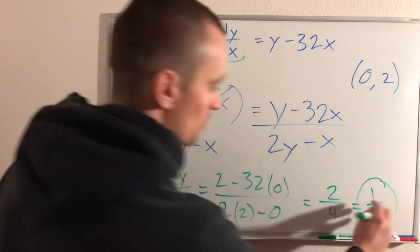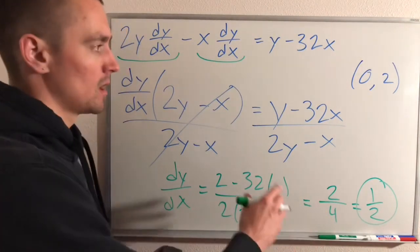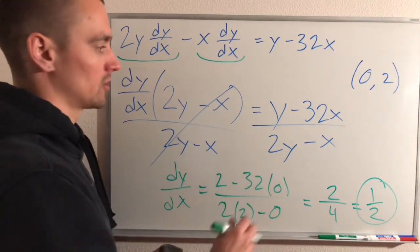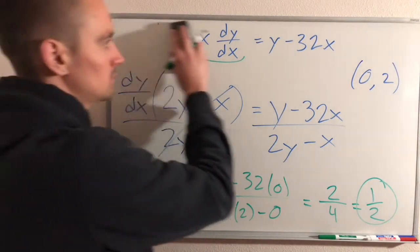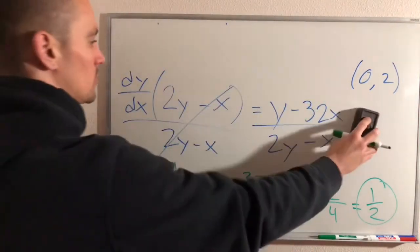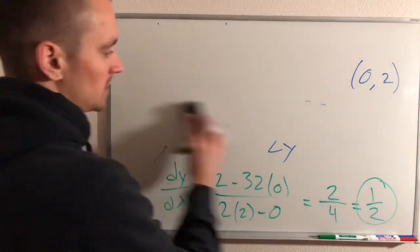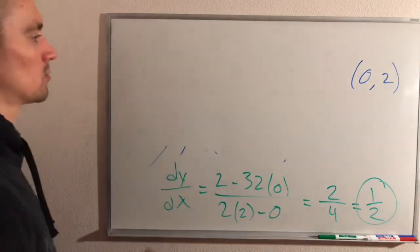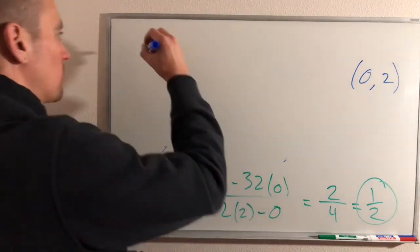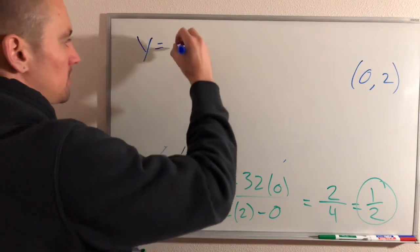All right, so the slope of our tangent line is going to be 1 half, but we're not done yet. What we need to do now is make sure that our tangent line goes through the point (0,2). So in general, when we're doing these kind of tangent line equations, we're usually going to want to use the point slope formula for a line, which is going to be this.